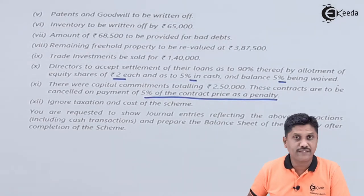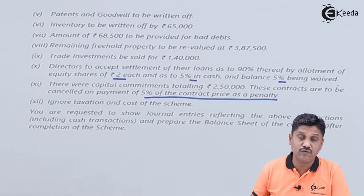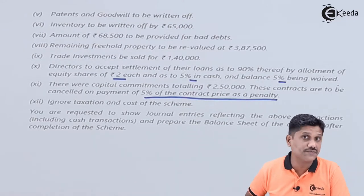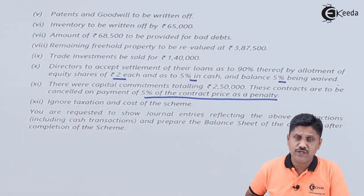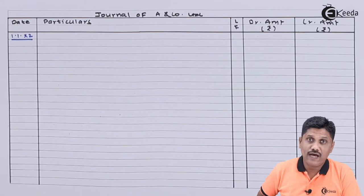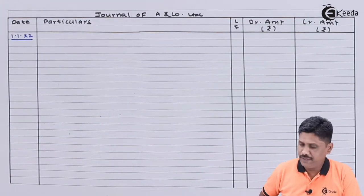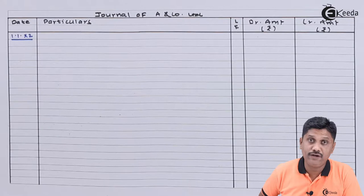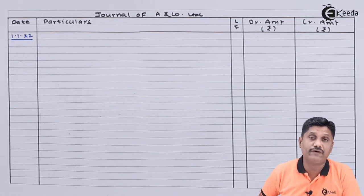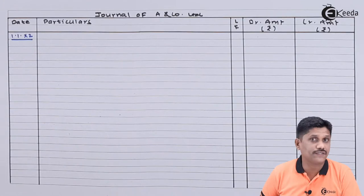We are asked to prepare journal entries reflecting all the above transactions including cash transactions, and to prepare the balance sheet of the company after completion of the scheme. So we have to pass journal entries and then prepare a balance sheet. I am now ready with my journal format and will record all transactions one by one, with a separate entry for each transaction.